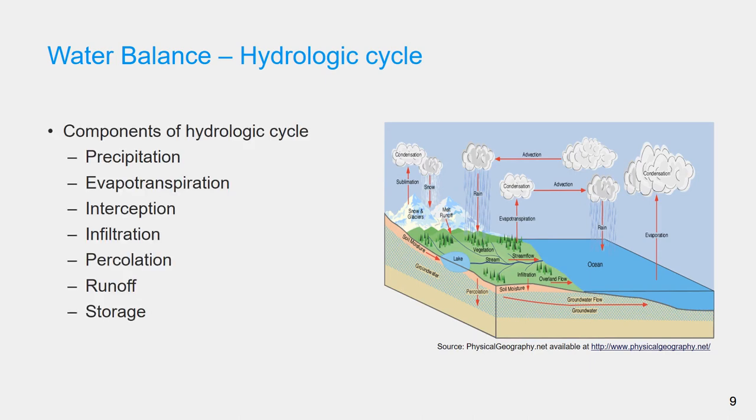Water balance method can be used to evaluate the components of the hydrologic cycle. The hydrologic cycle is a conceptual model that describes the storage and movement of water between different spheres of the earth, which are biosphere, atmosphere, lithosphere, and the hydrosphere.